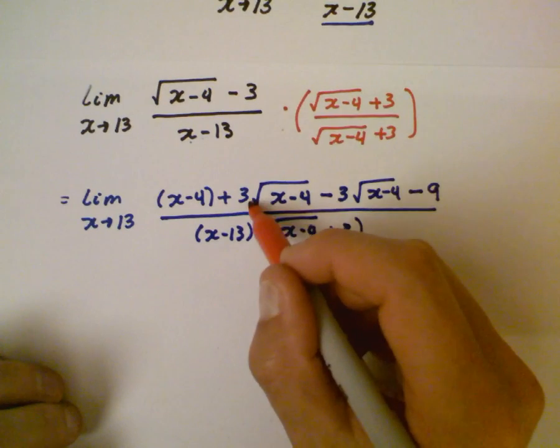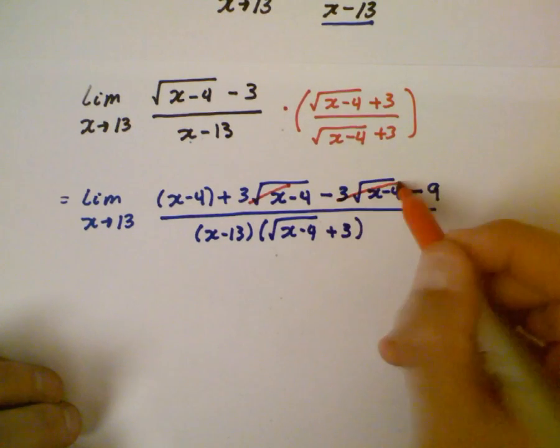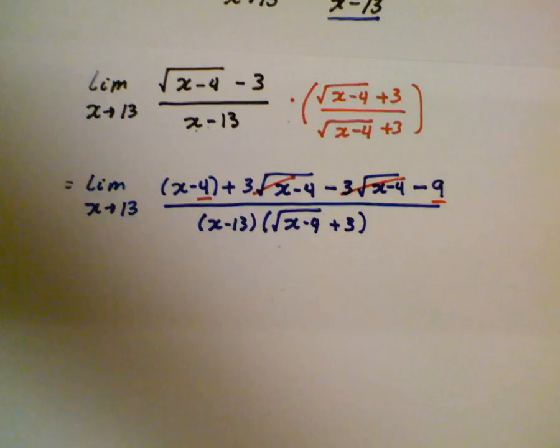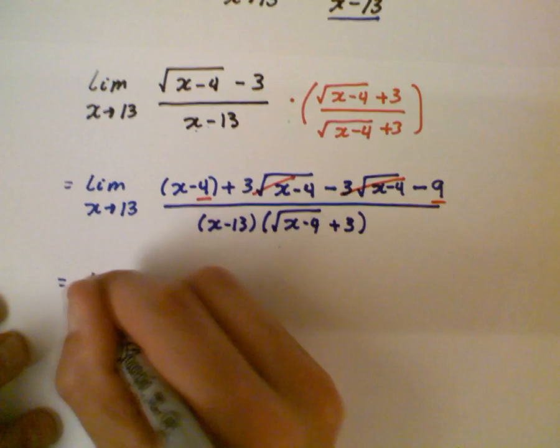We have additive inverses here. This is gone. This is gone. And then we have the minus 4 minus 9. So we're on our way to finishing up this problem with algebra.